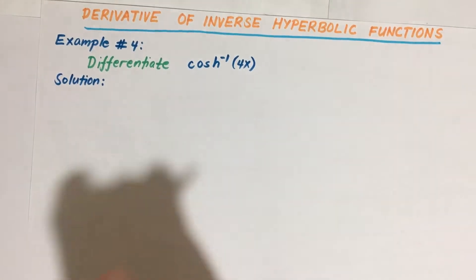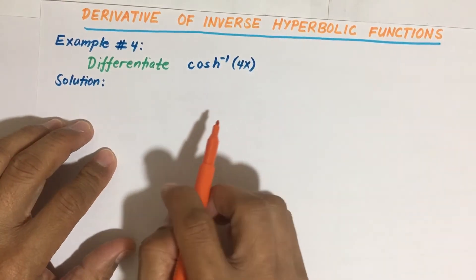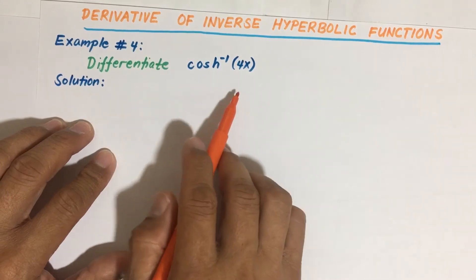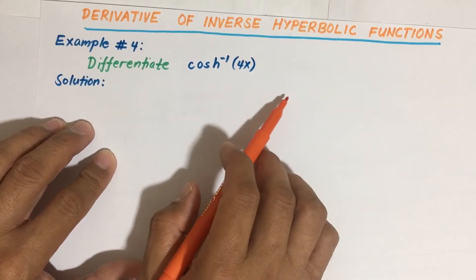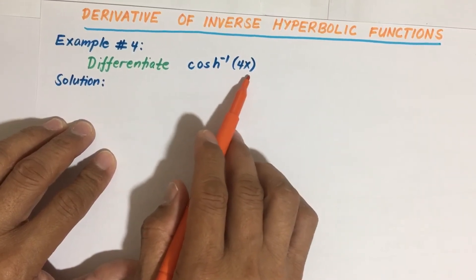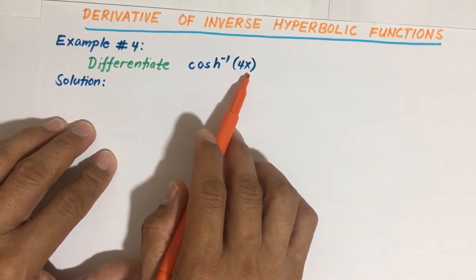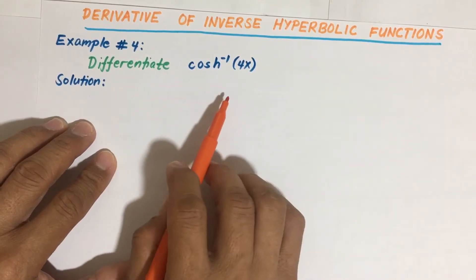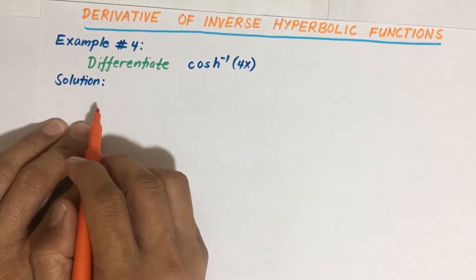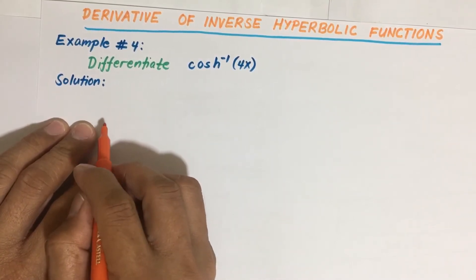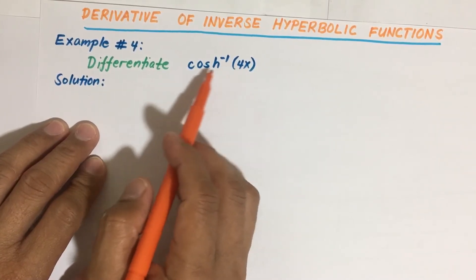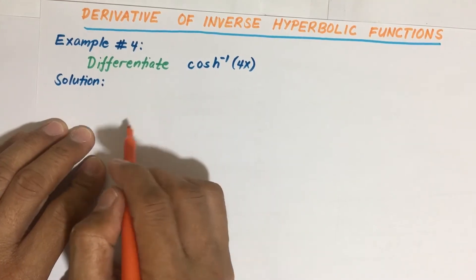For our solution, this is actually similar to example number one, where you are asked to differentiate a given function with respect to x. It's not explicitly mentioned, but since our function contains the variable x, we have to differentiate with respect to x. The solution is to let y or any variable represent the given inverse hyperbolic cosine function, or simply differentiate directly.